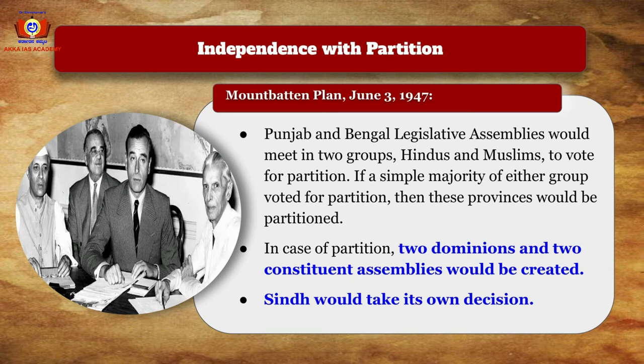The Mountbatten Plan was designed on June 3, 1947. According to it, the Punjab and Bengal legislative assemblies would meet in two groups — Hindus and Muslims — to vote for partition. If a simple majority of either group voted for partition, then those provinces would be partitioned.